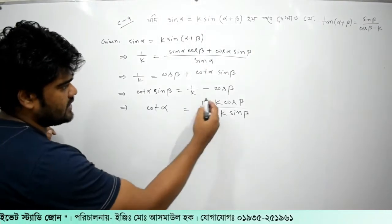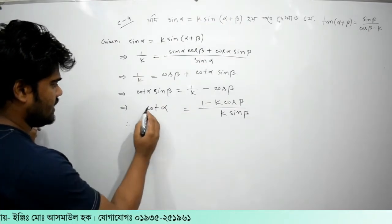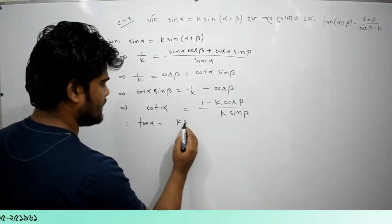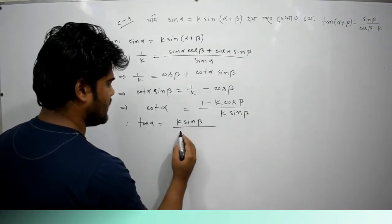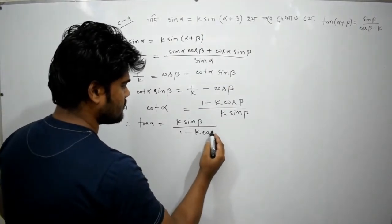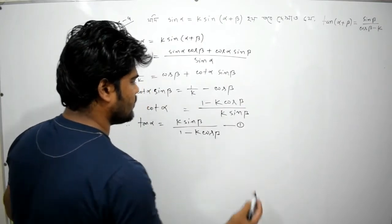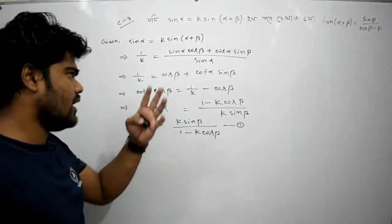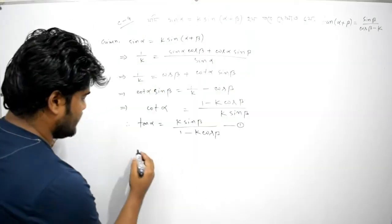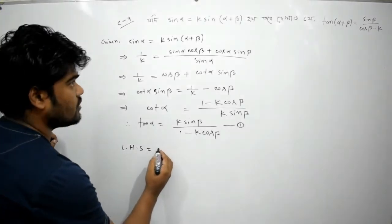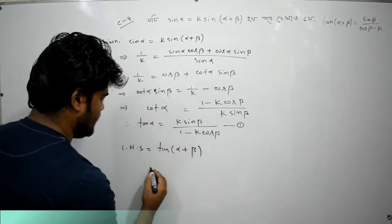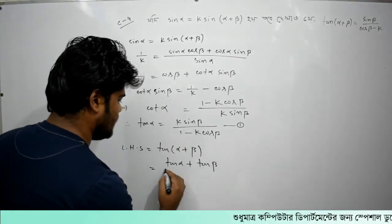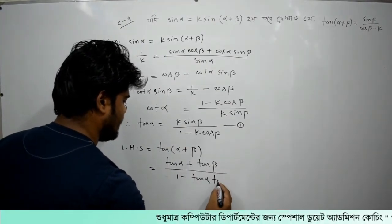We have to call alpha alpha, but the function of k. I will put the function of k — 2k. Sine beta divided by 1 minus k cos beta. And: tan A plus tan B divided by 1 minus tan A plus tan B.